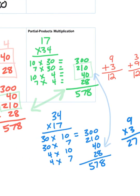So as long as you remember that 17 is 1 ten and 7 ones and you remember that 34 is 3 tens and 4 ones, if you multiply all four of those digits in any order you should get the correct answer.